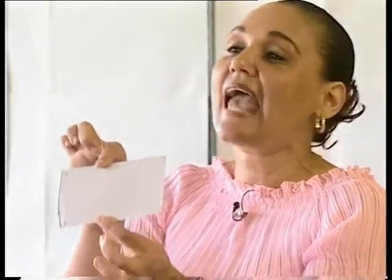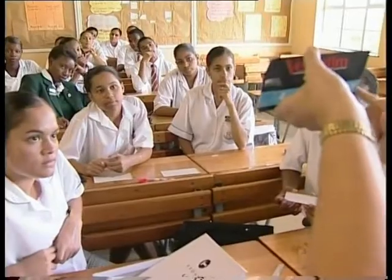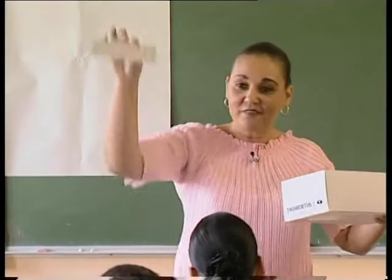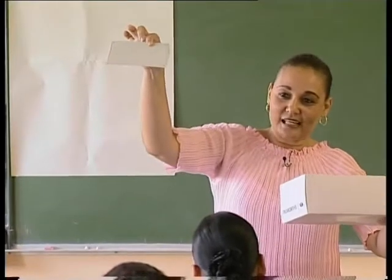The teacher asks what shape the bottom is — a rectangle — and what dimensions a rectangle has. Learners identify the length and the width. She then asks: "As compared to the box, what does the box have that the flat rectangle doesn't have?" — pointing toward the concept of the third dimension: height.